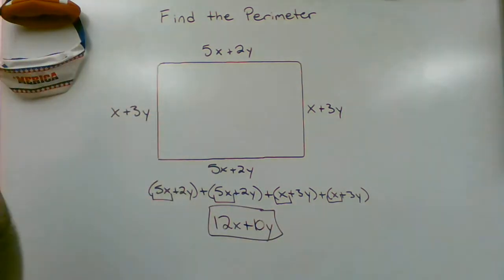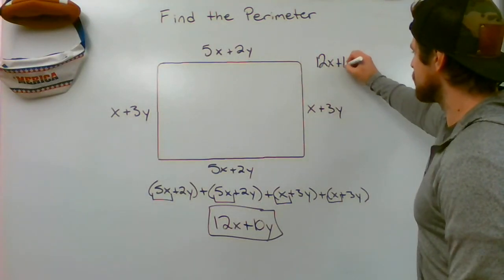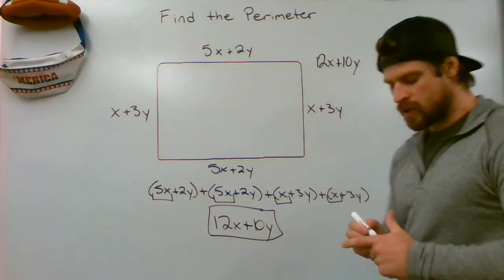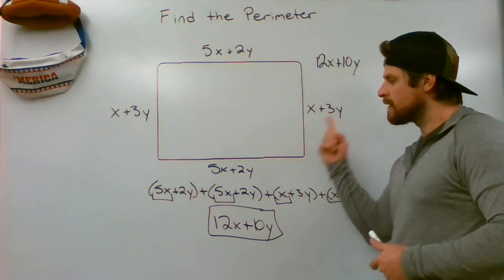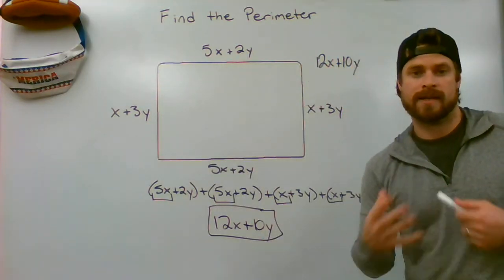So you're asked, what's the perimeter of the given rectangle? You would give the expression 12x plus 10y. You solve that by combining like terms when adding all four of the sides' expressions together.